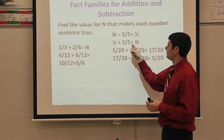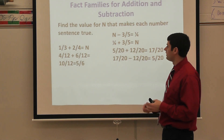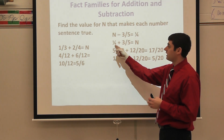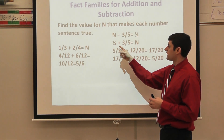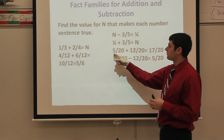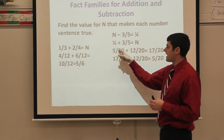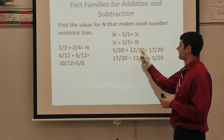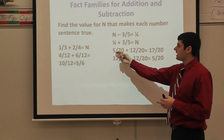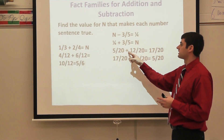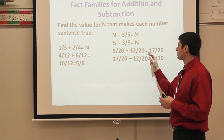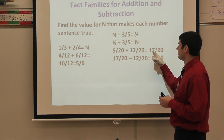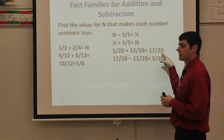So one fourth plus three fifths is going to equal n. I have to find a common denominator. The least common denominator between four and five is 20. Four times five is 20, five times one is five, giving five twentieths. These are equivalent fractions with different denominators. For three fifths: four times five is 20, four times three is 12, giving twelve twentieths. So five twentieths plus twelve twentieths equals seventeen twentieths. Now I know n equals seventeen twentieths.